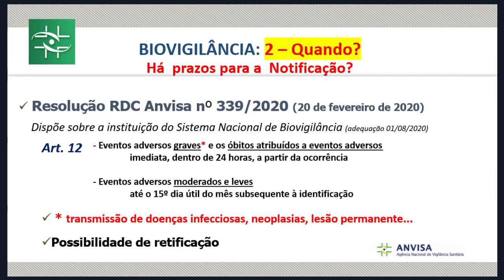Quanto aos prazos: o artigo 12 da norma traz que os eventos graves e óbitos atribuídos a eventos adversos devem ser notificados de forma imediata, dentro de 24 horas. As reações adversas moderadas e leves devem ser notificadas até o 15º dia útil do mês subsequente à sua identificação. Existe também a possibilidade de retificação e complementação das informações inicialmente enviadas na ficha de notificação.